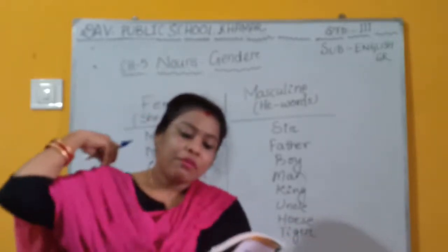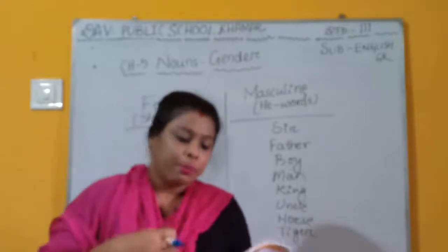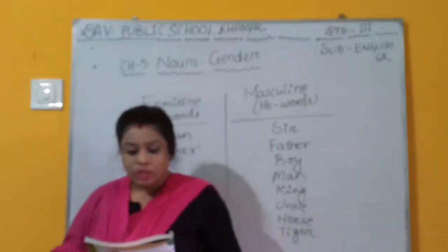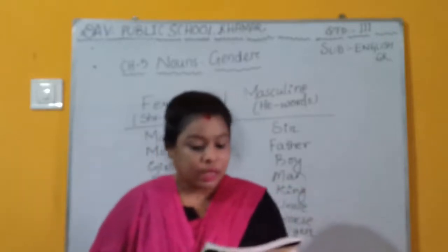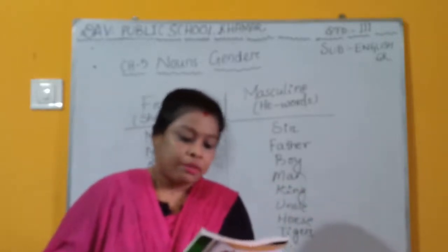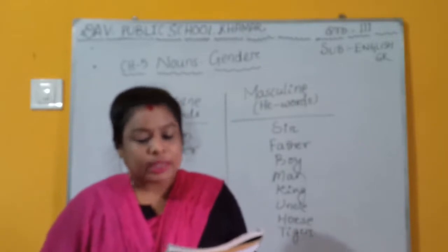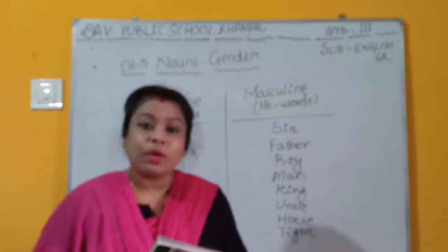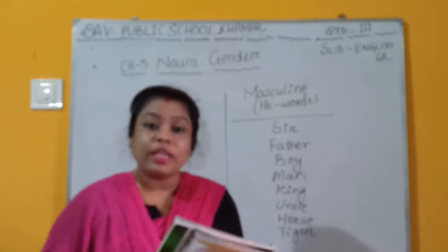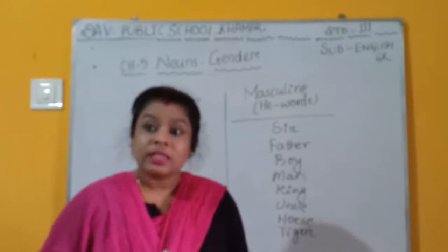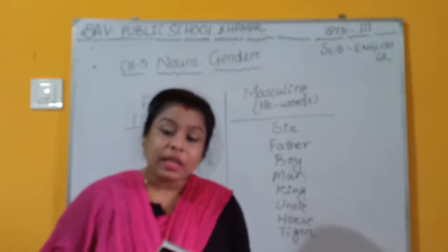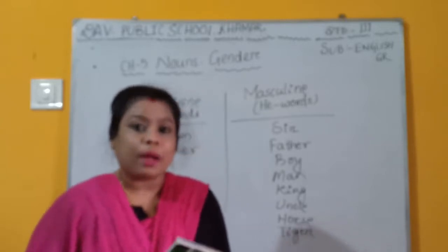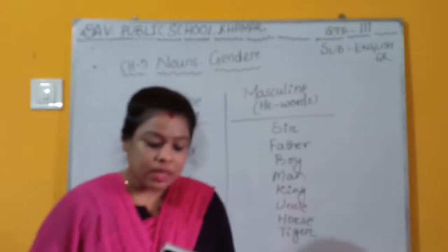Give the feminine of the following to complete the pairs: King — Queen. Grandfather — Grandmother. Father. Tiger. Sister. Nephew — Niece, spelled N-I-E-C-E. Wife. Woman. Madam. Lion. Bull. God.